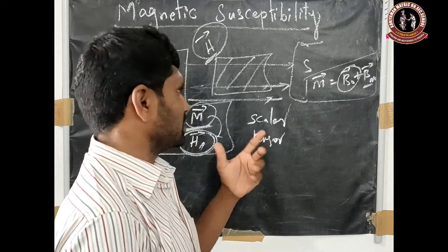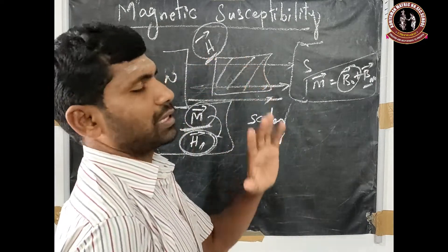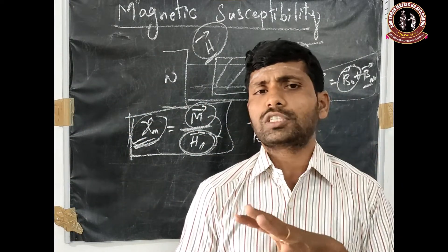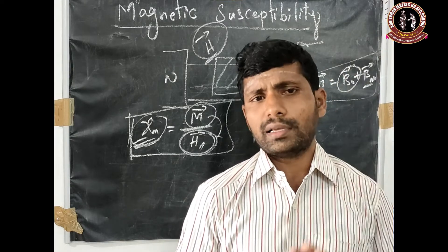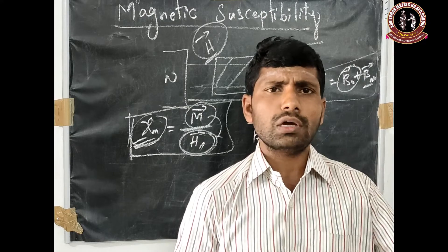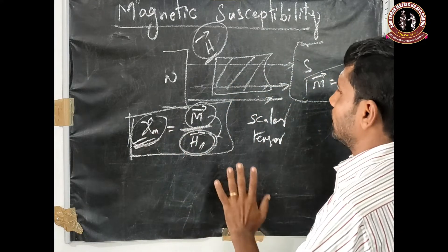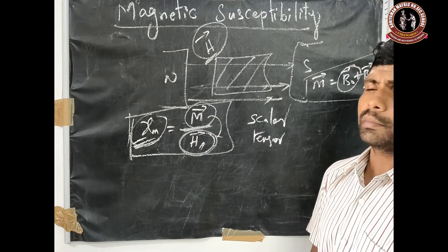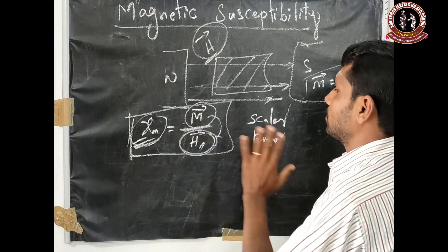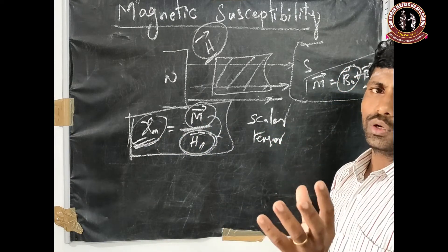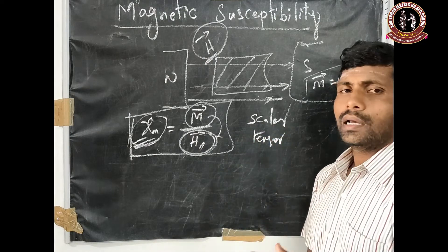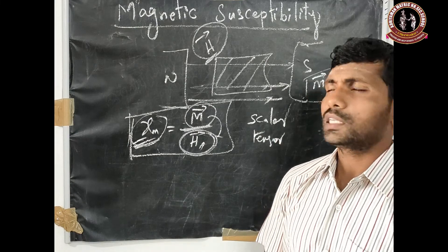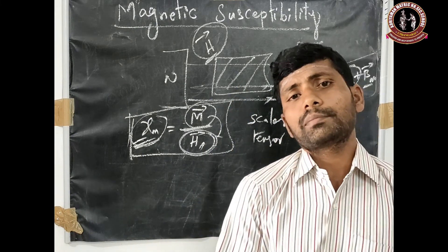Magnetic susceptibility is defined as the ratio of intensity of magnetization to the applied magnetic field. It is a property of magnetic materials. In an isotropic medium it is a scalar; in a non-isotropic, non-uniform magnetic field it is a tensor.